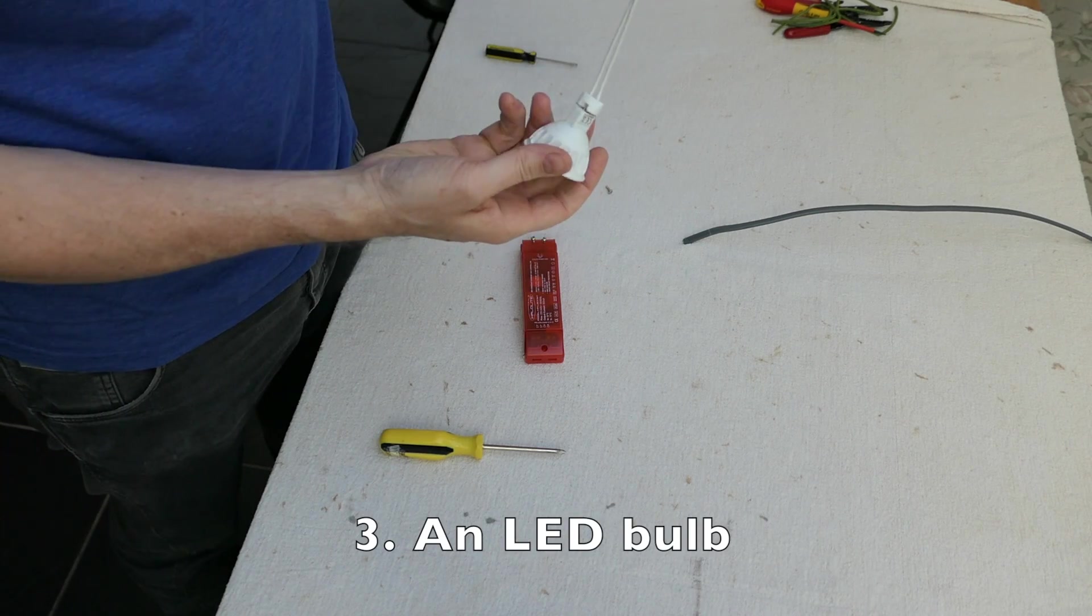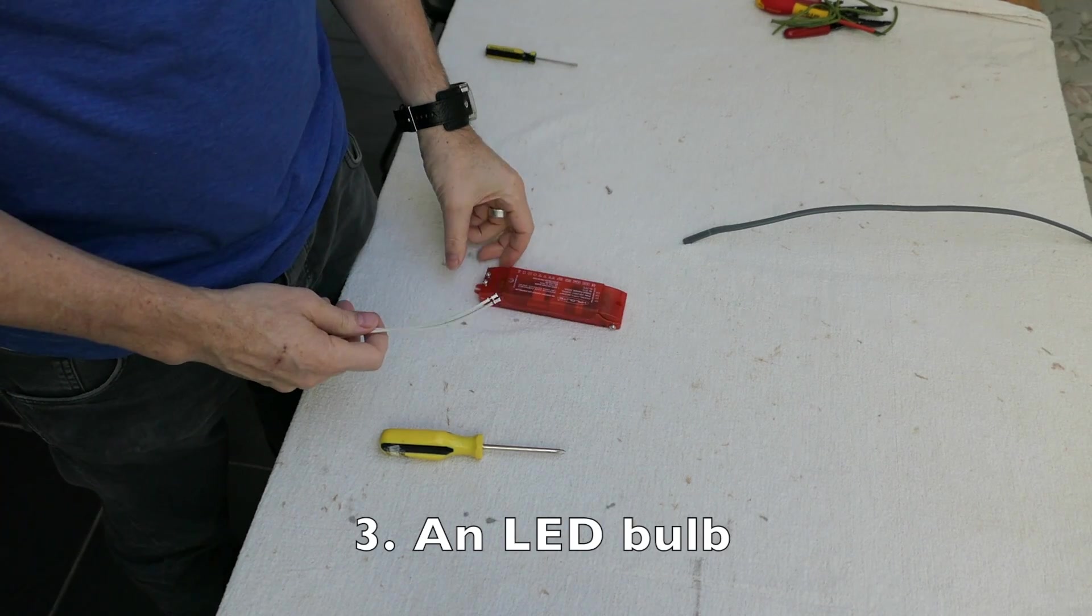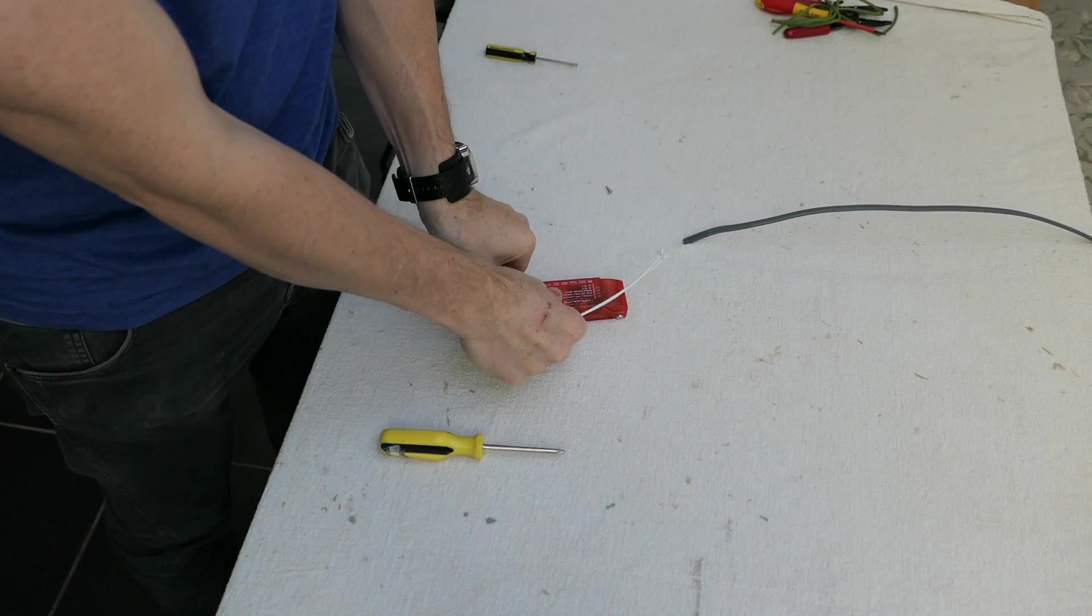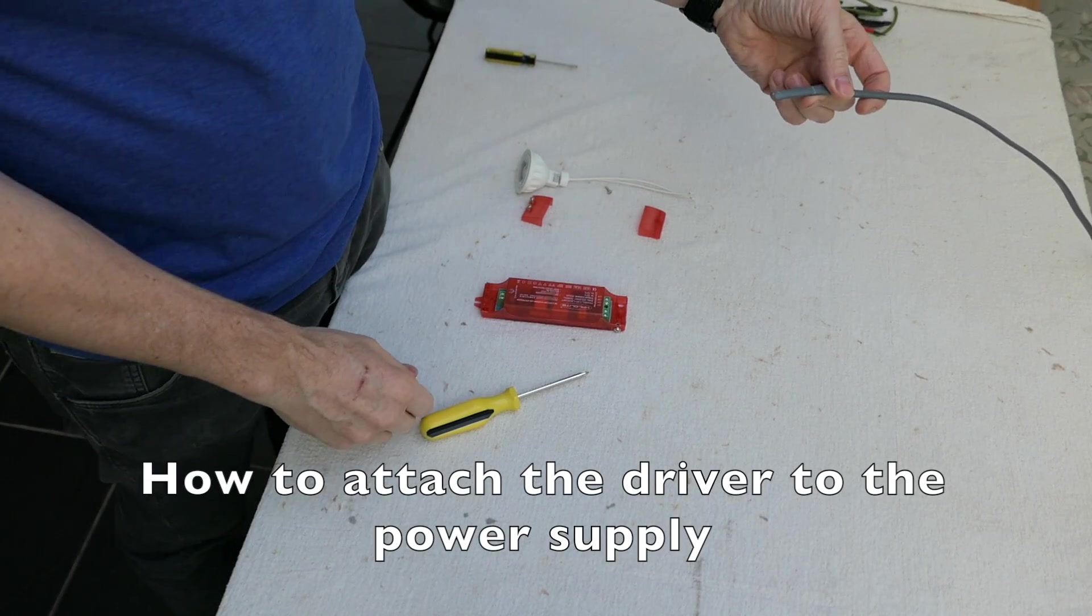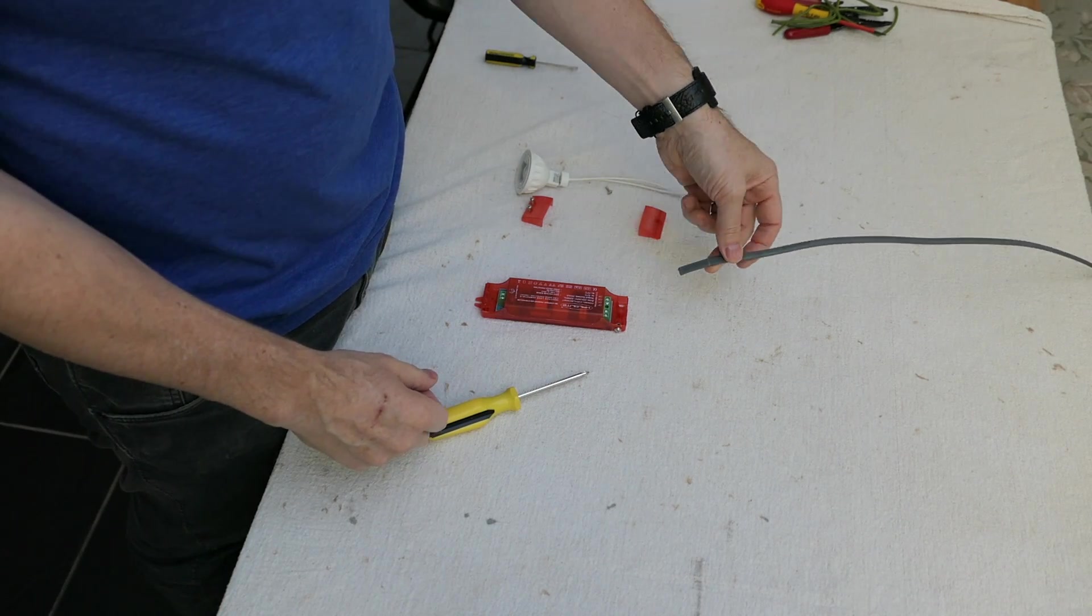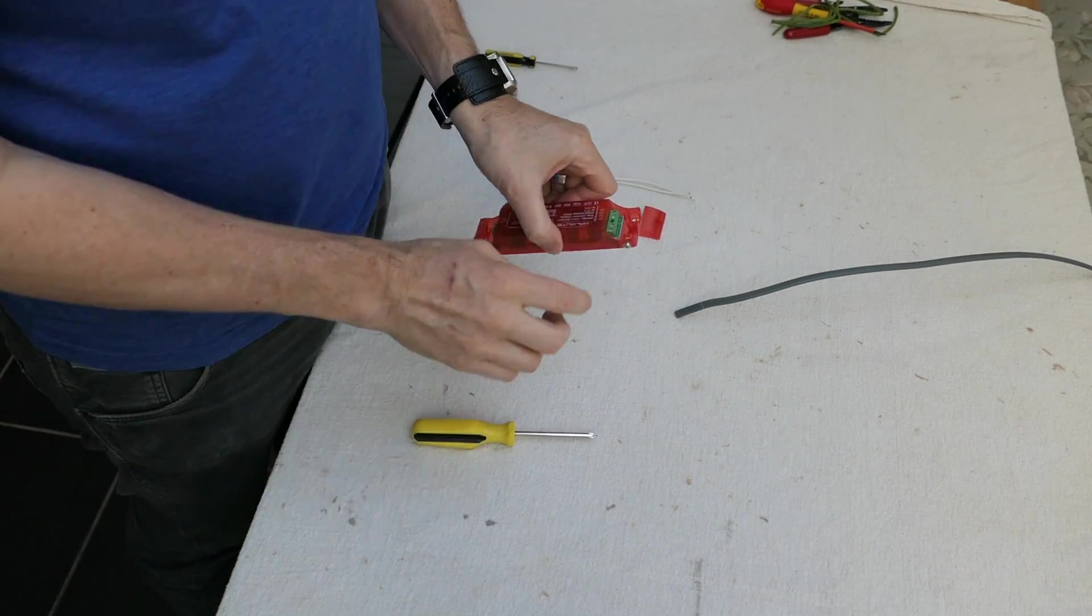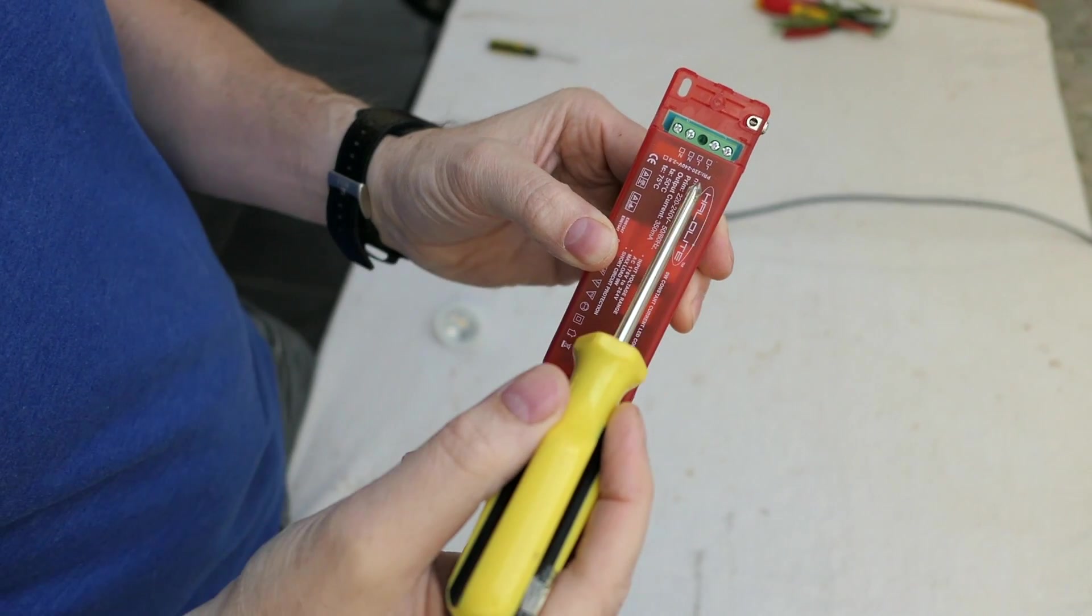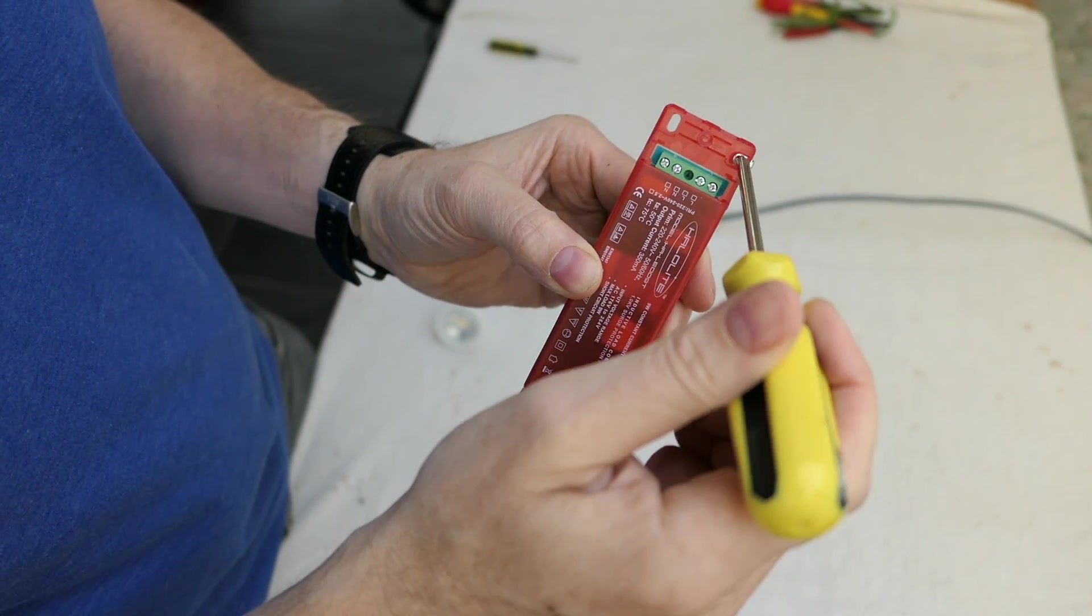The bulb fits straight into the connector, which then screws into the driver. This is how you attach the driver to the main power supply. This is a twin and earth cable that you can access in the ceiling. This attaches to the driver using the live, neutral, and the earth.